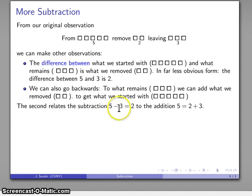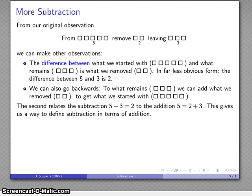So our subtraction 5 minus 3 is equal to 2 is going to be tied to the addition 5 is equal to 2 plus 3. And this leads us to a formal way of defining subtraction in terms of addition.